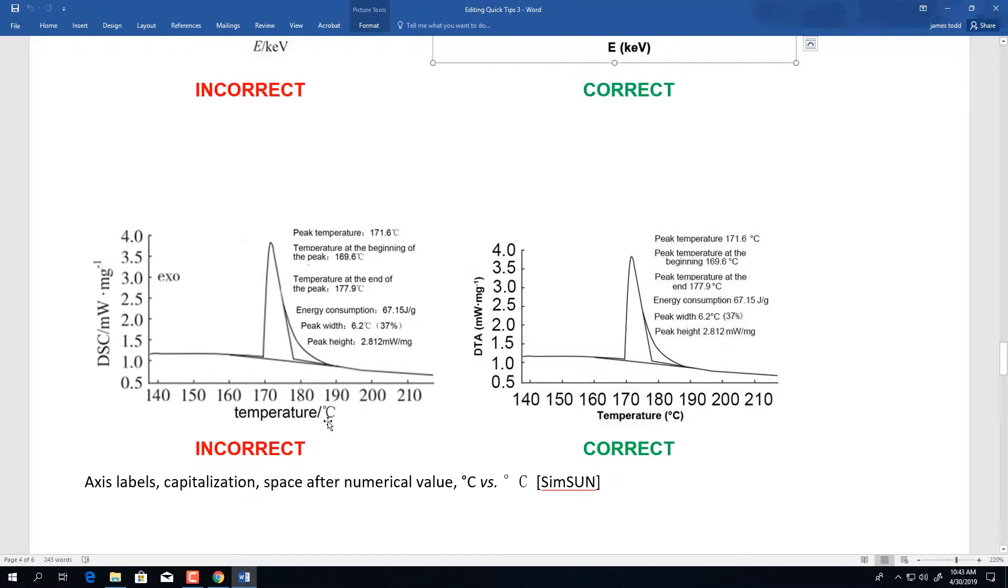On the left here is an example of the popular symbol for temperature, degrees Celsius, in SimSum font. I have also written this down here to show an example of the difference. Notice the spacing between characters for SimSum font. When using Arial, the letters and symbols are closer together. So on the left-hand side, we are using the incorrect font format, and on the right-hand side, we have the correct font format.